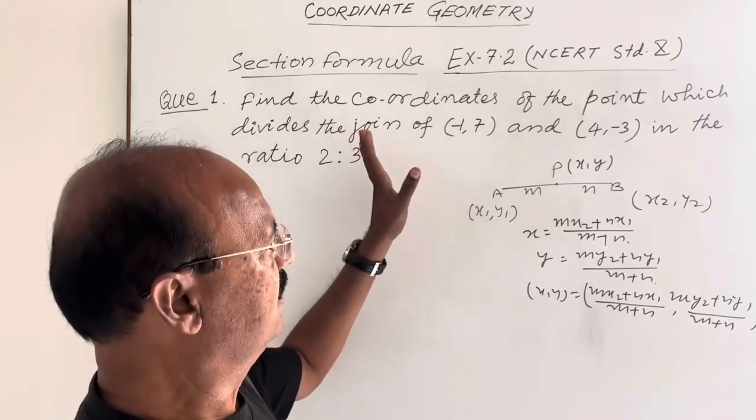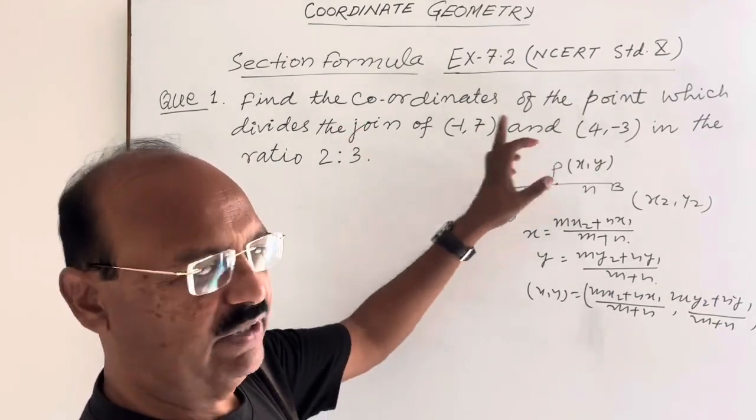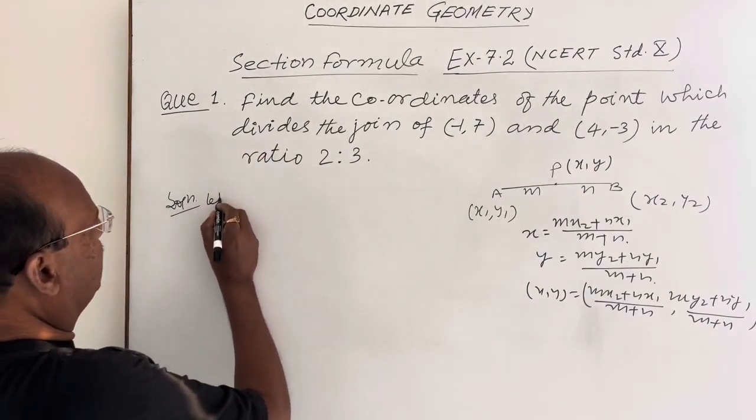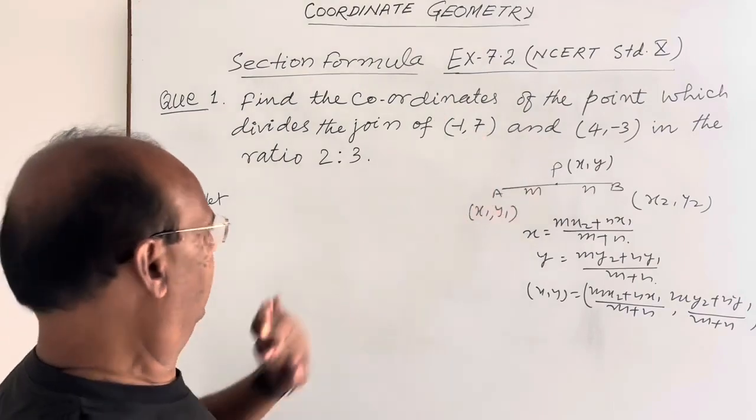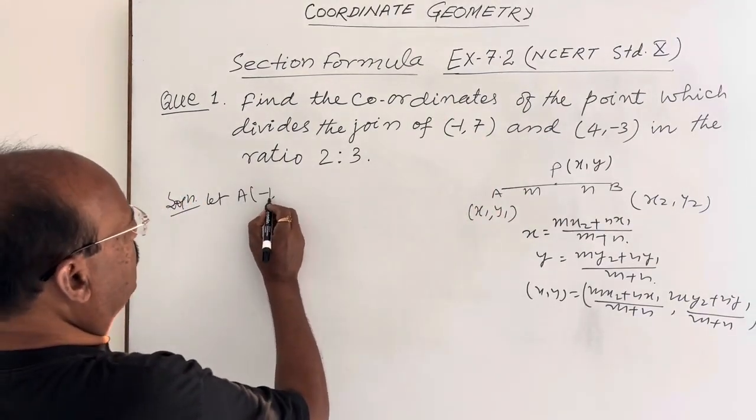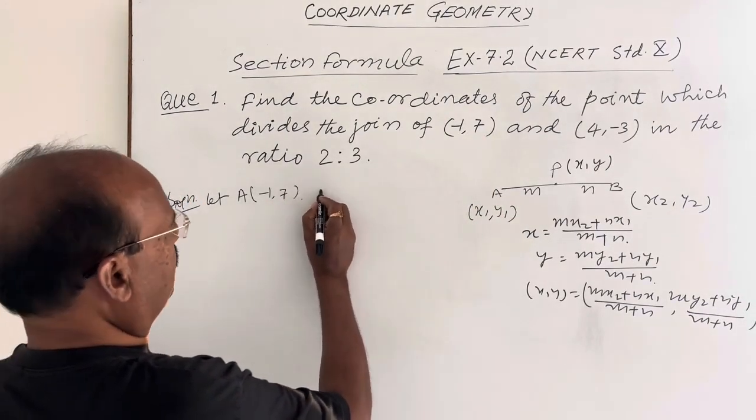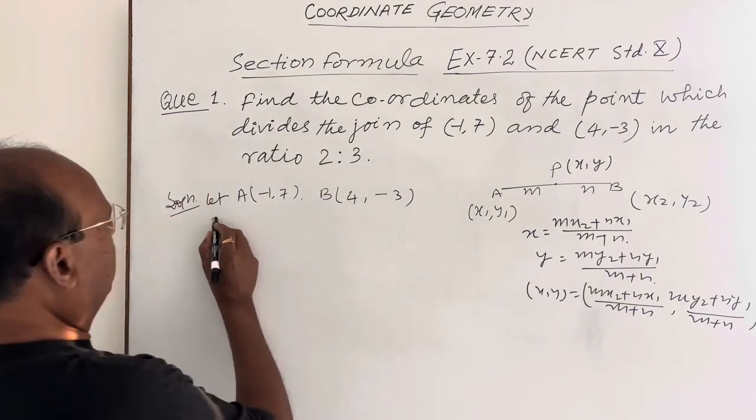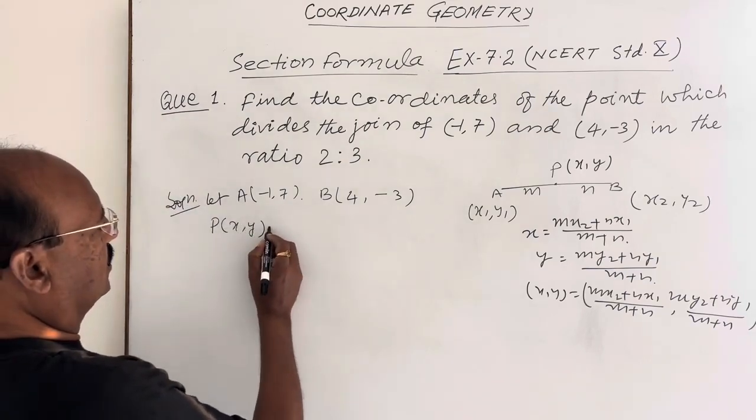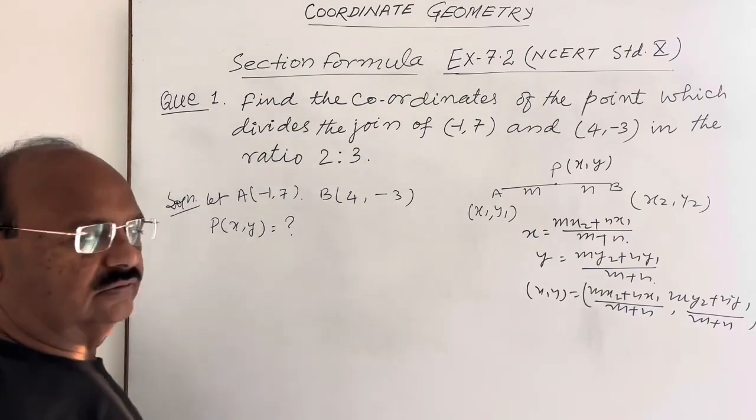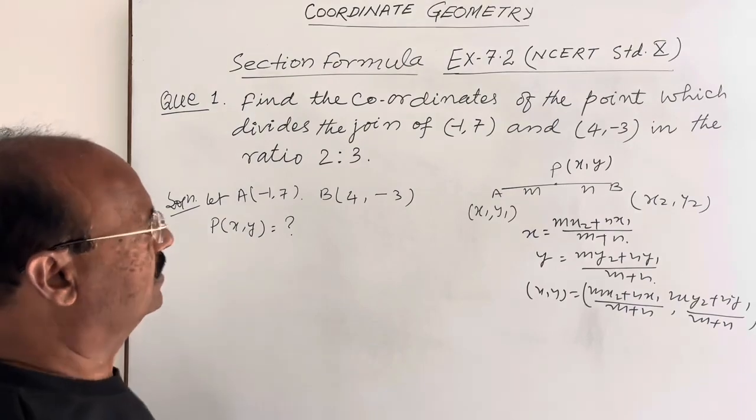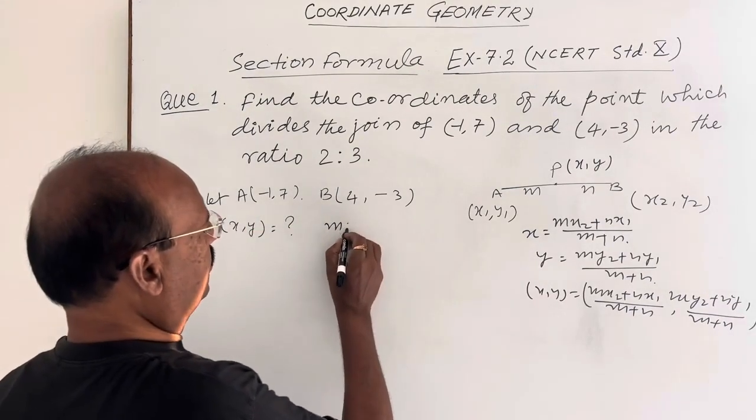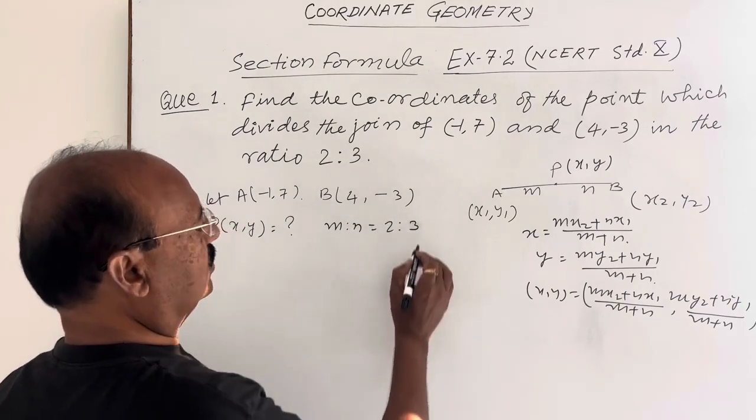So let us see the solution here. Let us suppose that these two points are A and B. Point A has coordinates (-1,7) and point B has coordinates (4,-3). And we have to find out the coordinates of the point P which divides the line segment AB in the ratio 2:3, which means m:n equals 2:3.